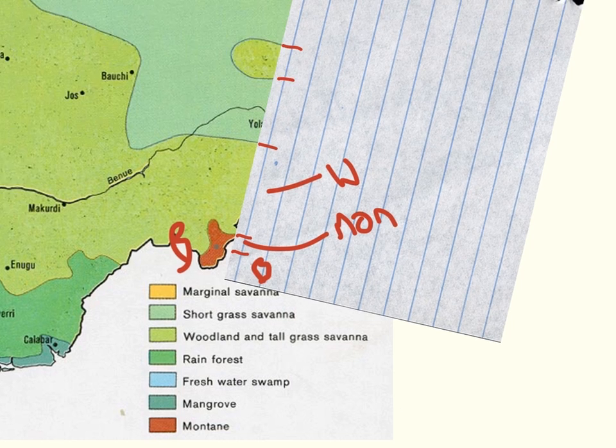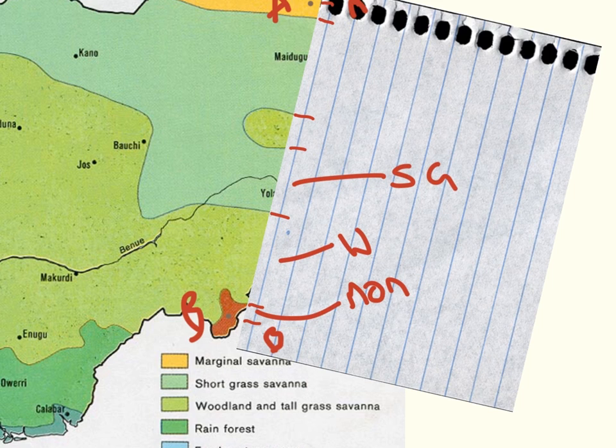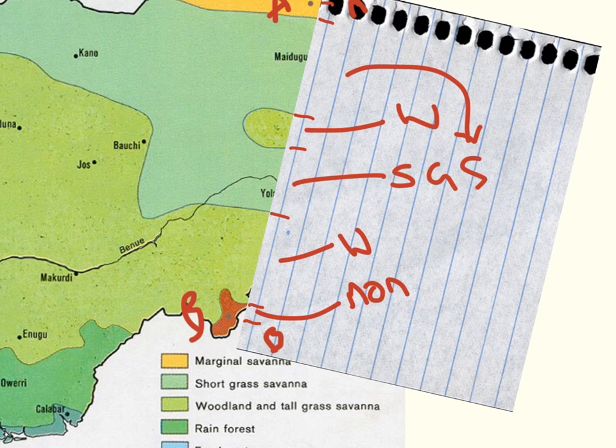Then if we move up a little bit, we see short grass savannah. So we grab short grass savannah. Then we go back to woodland and tall grass savannah. So W again. And then we're back to short grass savannah. So maybe we can even get and just point to that as well.